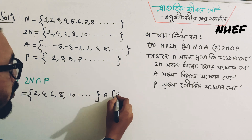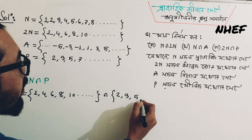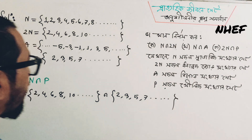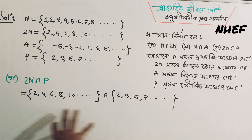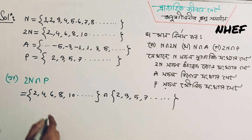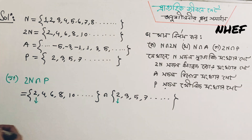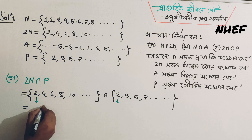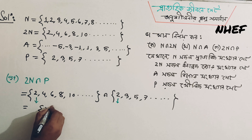The set is 1, 3, 5, 7. The set is 2, 3, 5, 7. Very, very easy — that set is 2.